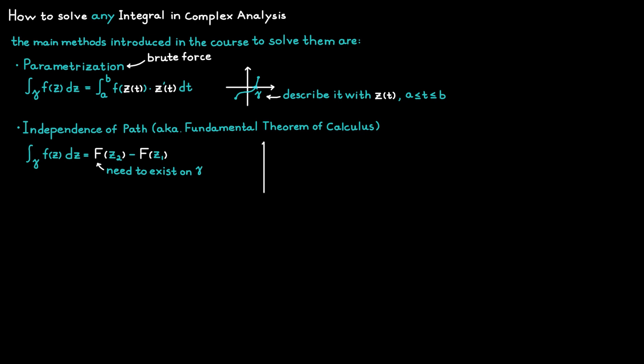So for example, two different contours will give us the same result as long as we have the same start and end points. So these two for example. And if we are dealing with a loop, then the integral will always be equal to zero, since a loop always starts and ends at the same point.